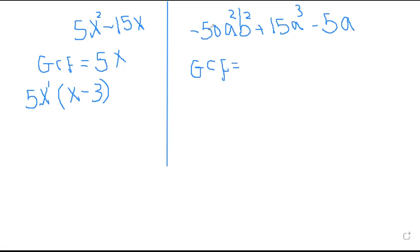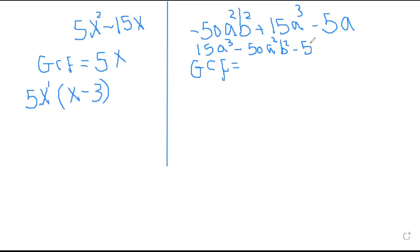We can find the prime factorization for 50, 15, and negative 5. If we rearrange according to the power of a, we get 15a³ minus 50a²b² minus 5a. So we have 15, negative 50, and negative 5.